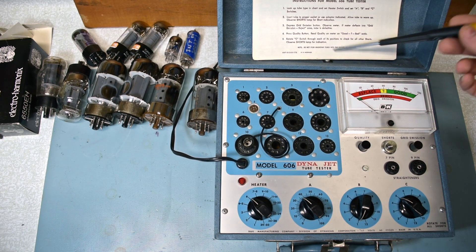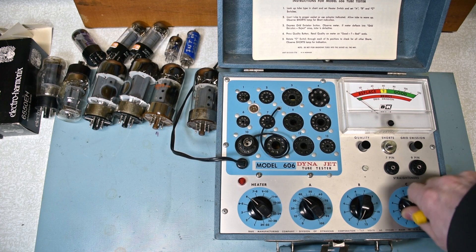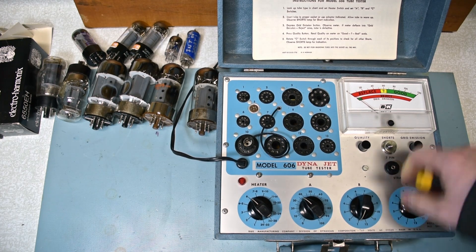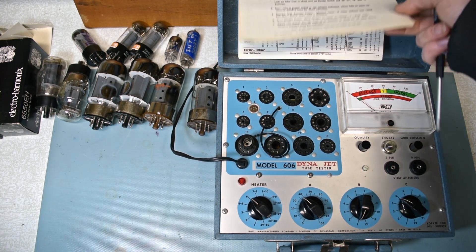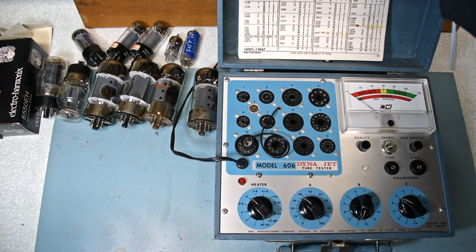And then you also can check for shorts by rotating knob C through all of its positions. And I found that some of these tubes will have additional notes that might apply.